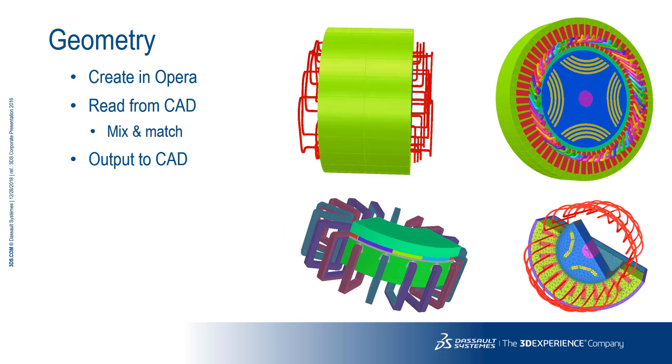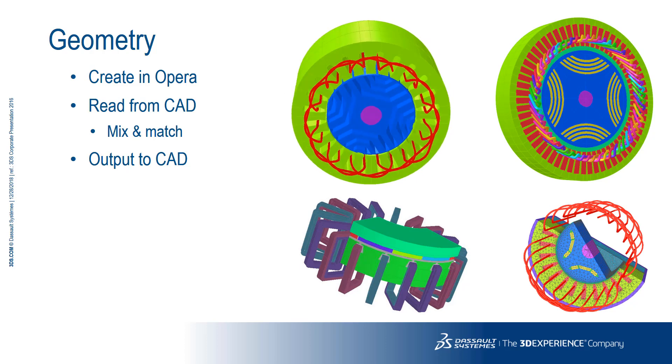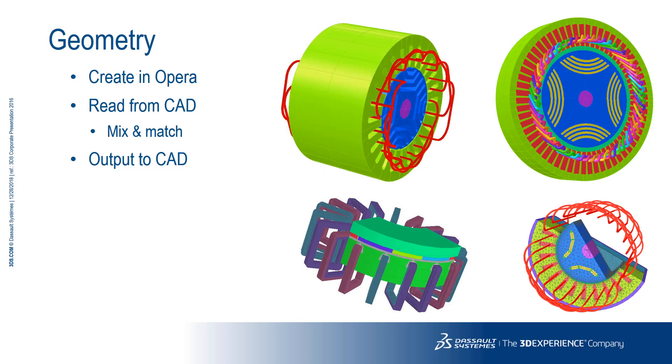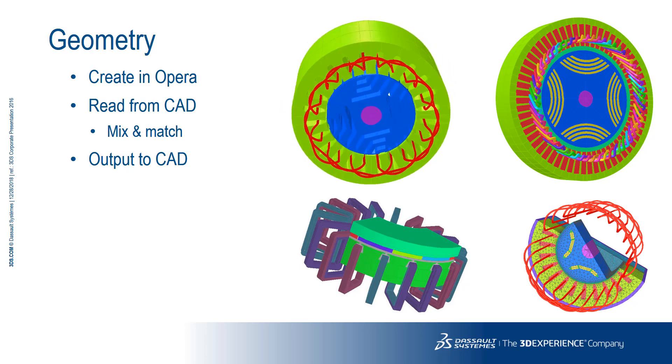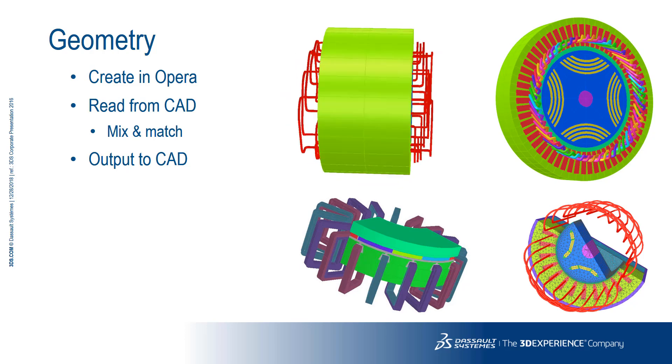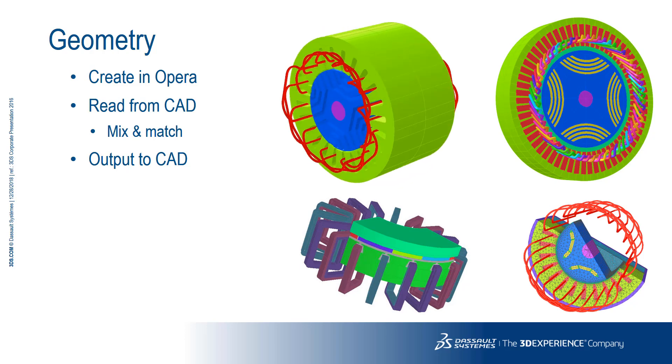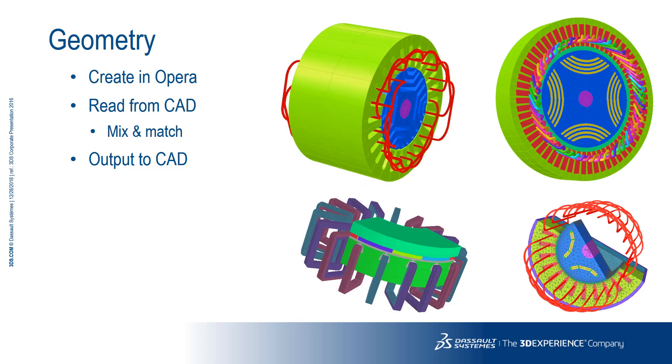Opera's modeler contains the ACES solid modeling kernel from Dassault System, which can be used to generate complex parametric models. Alternately, it can read and write many different formats of CAD file, both neutral formats and CAD-specific. These include SAT, CATIA, and SOLIDWORKS. The geometry can be mixed. You can start in Opera, add a CAD model, then edit the merged models.